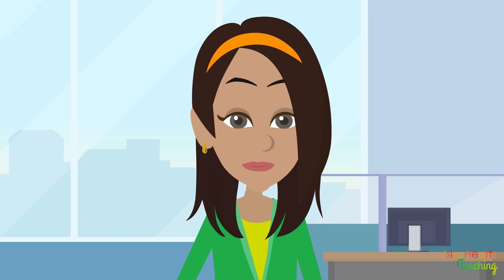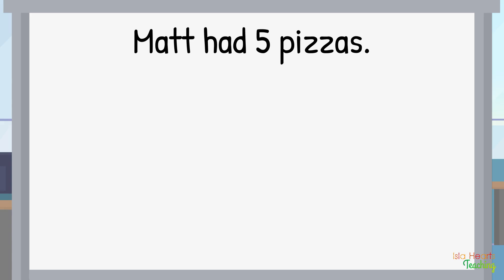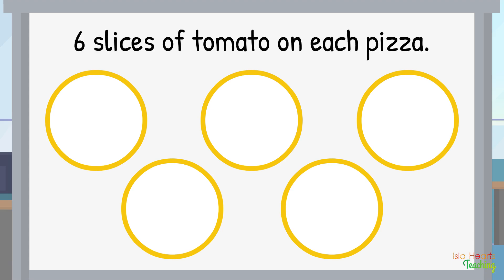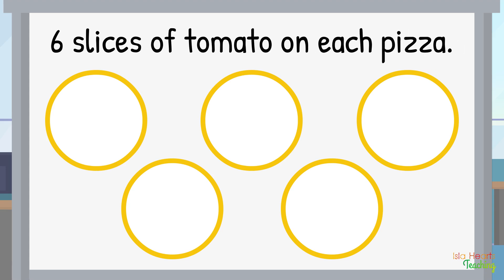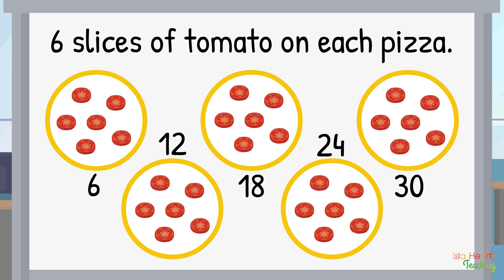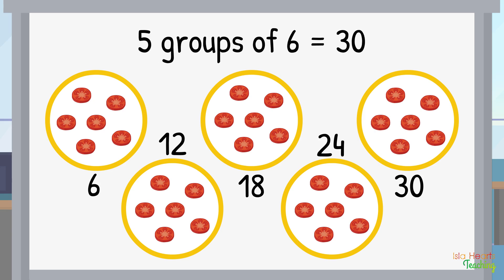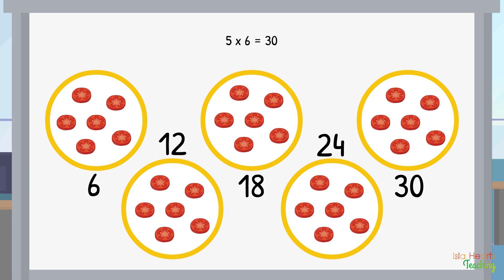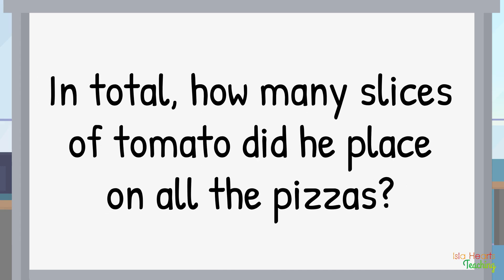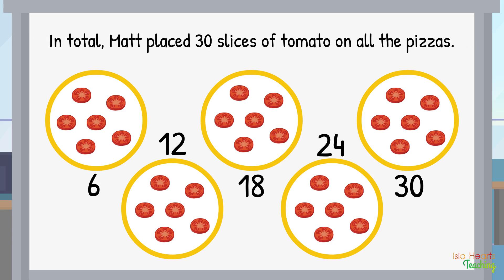Okay, we're back. The answer to the multiplication word problem is the following. Matt had 5 pizzas — 1, 2, 3, 4, 5 — with 6 slices of tomato on each pizza. Skip counting by 6's: 6, 12, 18, 24, 30. So the answer is 5 groups of 6 equals 30, and 6 plus 6 plus 6 plus 6 plus 6 equals 30. In total, Matt placed 30 slices of tomato on all the pizzas.